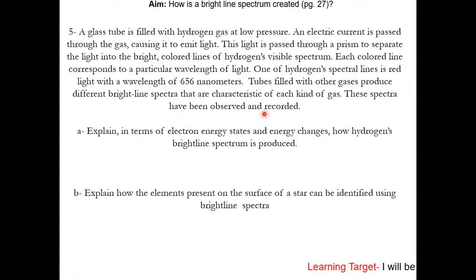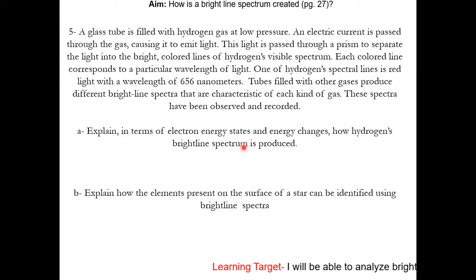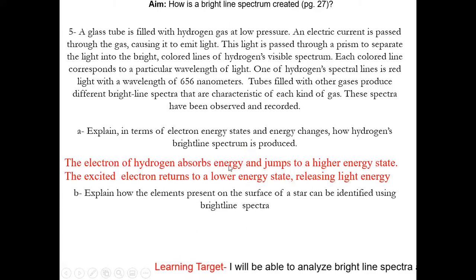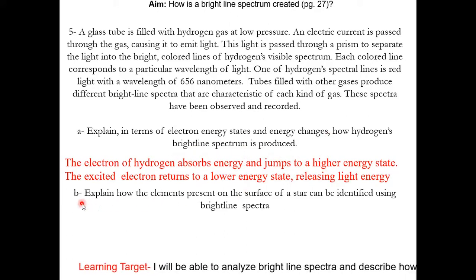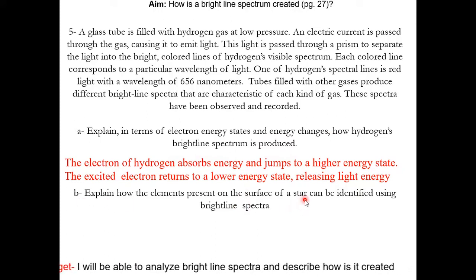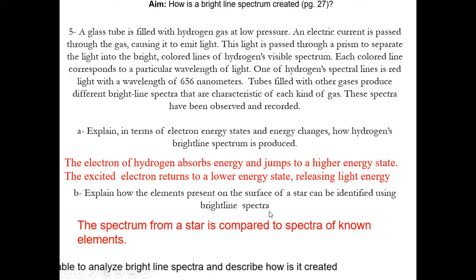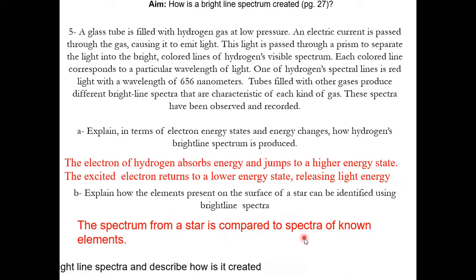Question number five is also a Regents free response. For part A, it's asking about the same thing as question number two — the Regents like asking this type of question, so make sure you can answer it. Question B is asking how you can identify the element present. Basically, you could compare the spectrum from the sample with the spectra of known elements.